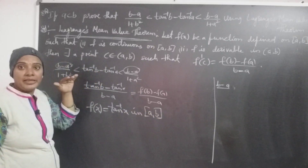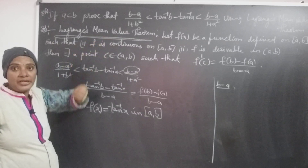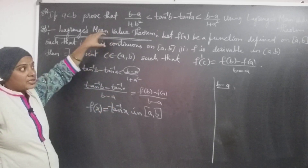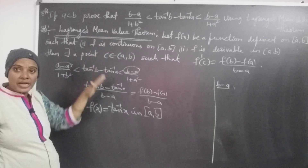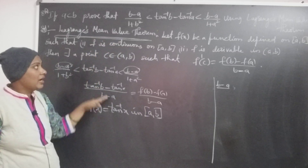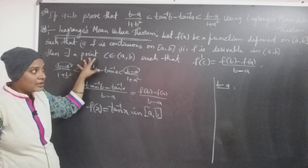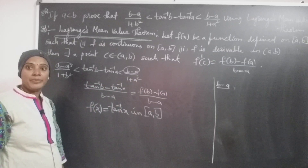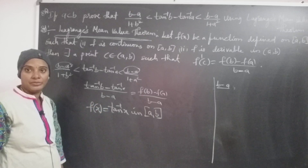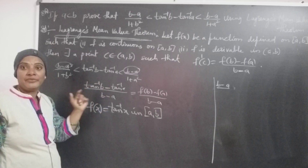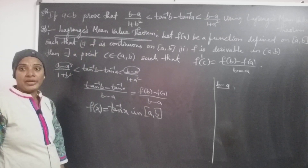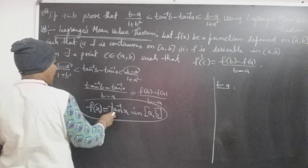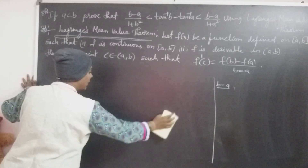First, identify the given function — which function is related in that relation. Identify that function and then show that it is continuous and derivable. If these two conditions are satisfied in that interval, then there exists a point C having the relation f(B) minus f(A) by B minus A equal to the derivative at that value. By using that relation we can find out how to show the given inequality. Here, f(x) equals tan inverse x, clearly defined on [A, B].